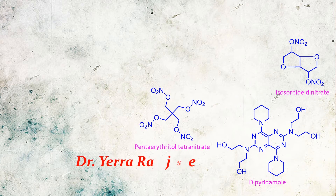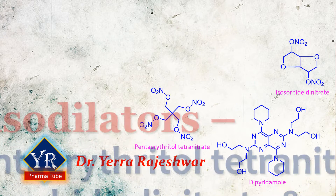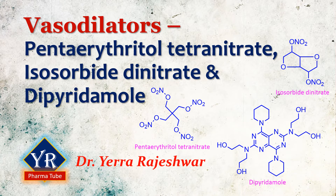Hi, this is Dr. Rajeshwar from YR Pharma Tube. In the previous video we discussed two vasodilator drugs: amyl nitrite and nitroglycerin. If you did not watch the video, hit the 'i' button on the top right. Links for other topics of anti-anginal agents and medicinal chemistry are given in the description below. In this lesson, we shall discuss few other vasodilators: penta erythritol tetranitrate, isosorbide dinitrate, and dipyridamol.